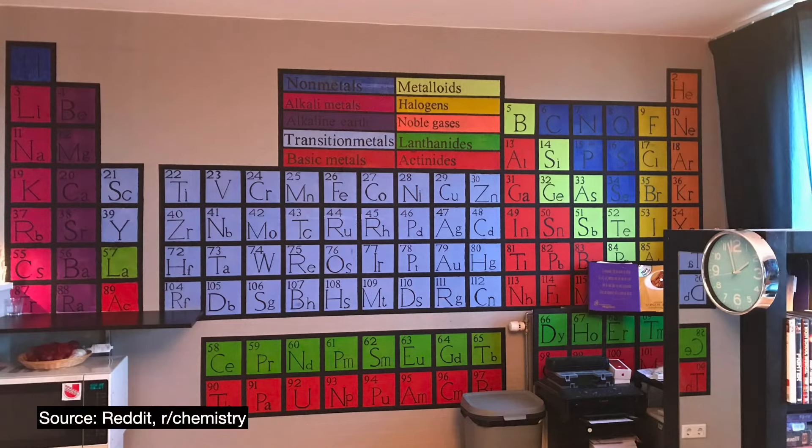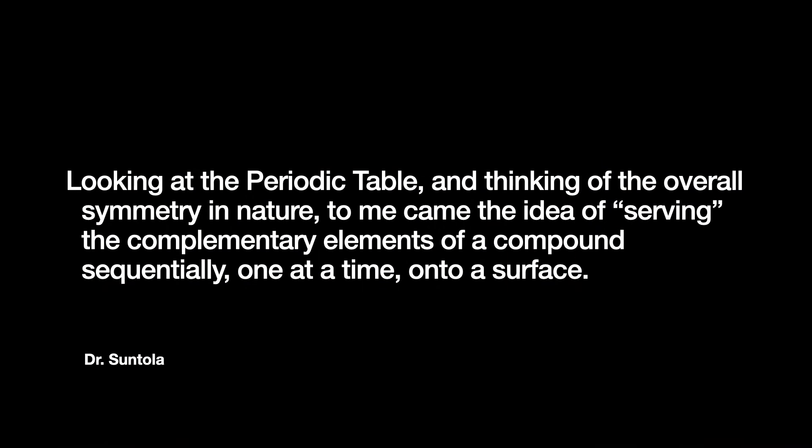In early June 1974, Suntola was pondering over this while in his lab. They had not moved in the equipment yet, so it was mostly just tables and a periodic table up on the wall. Looking up at that table, the idea came to him: to serve the complementary elements of a compound sequentially, one at a time, onto a surface. This is the crux of atomic layer deposition.